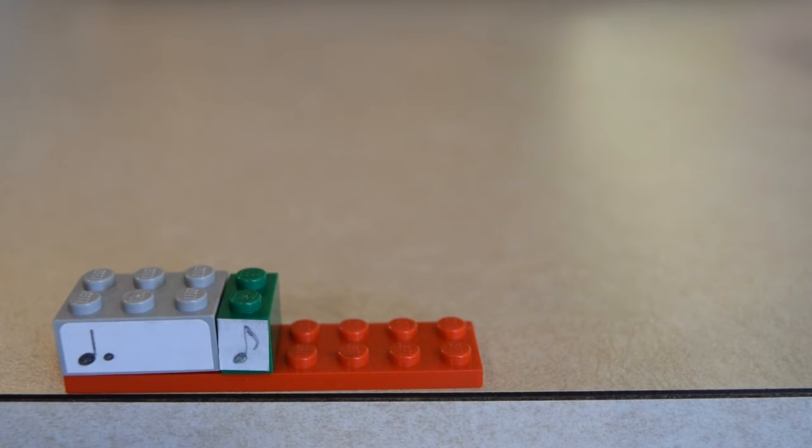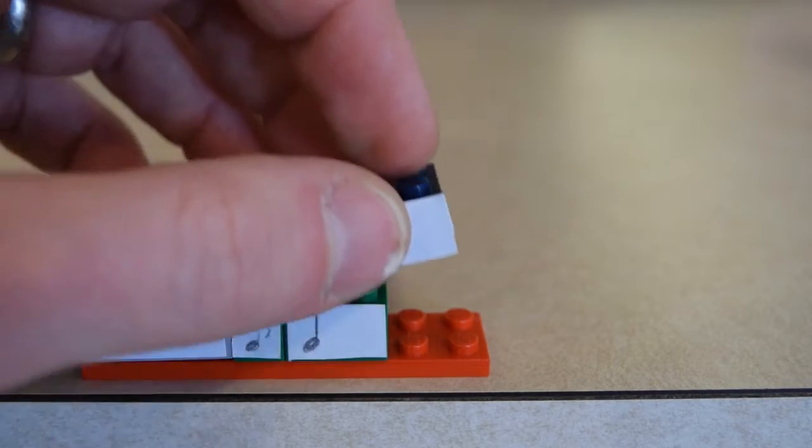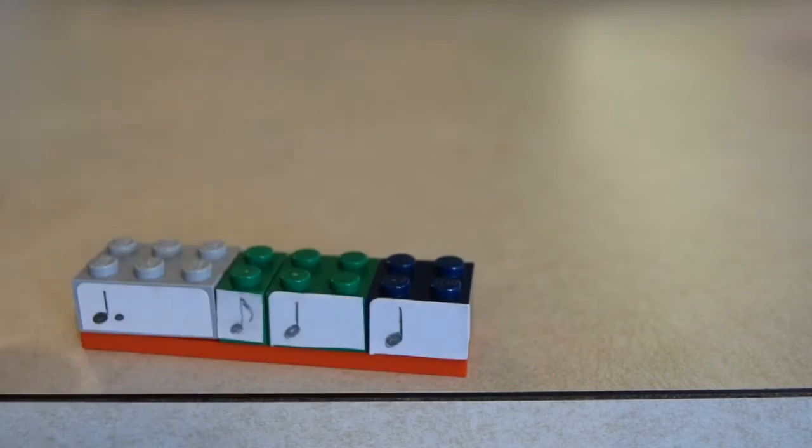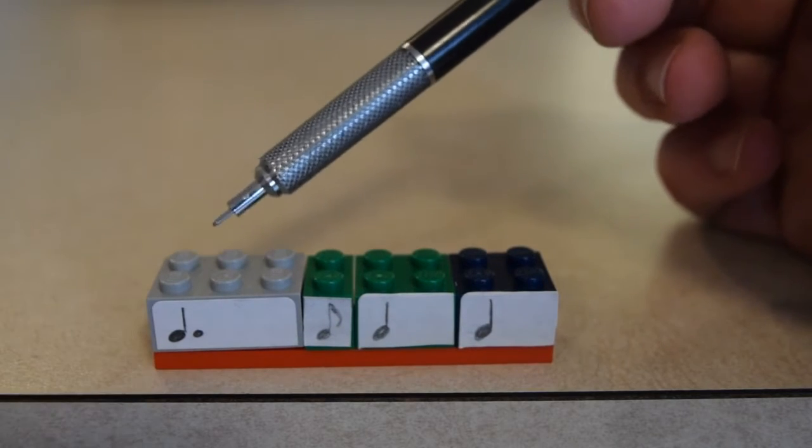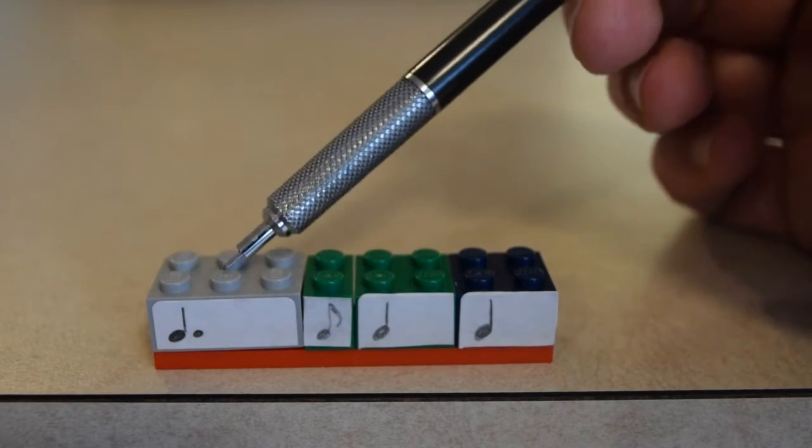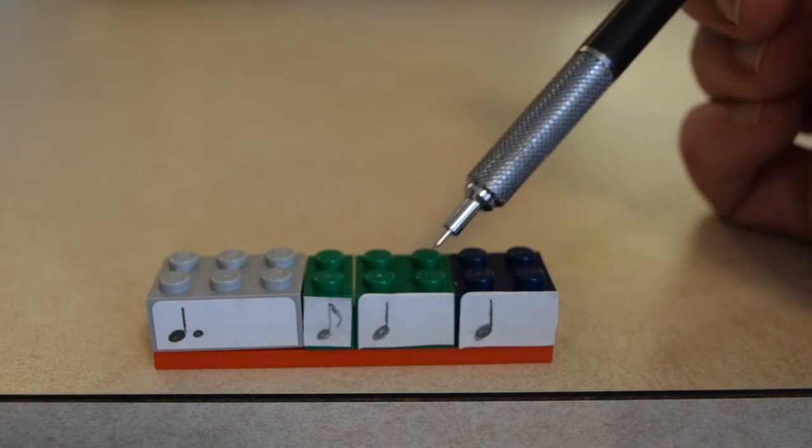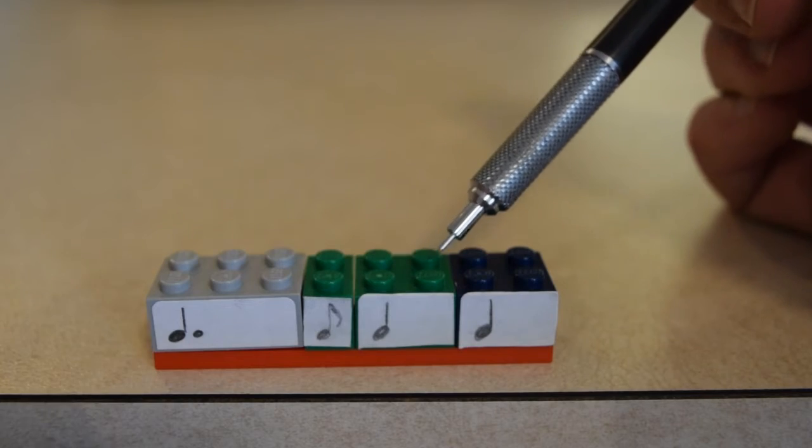And then the rest of that measure has a quarter note and another quarter note. So this is the first measure of All Through the Night. T-E-E-T-A-T-A or one and two and three and four and one and two and three and four and.